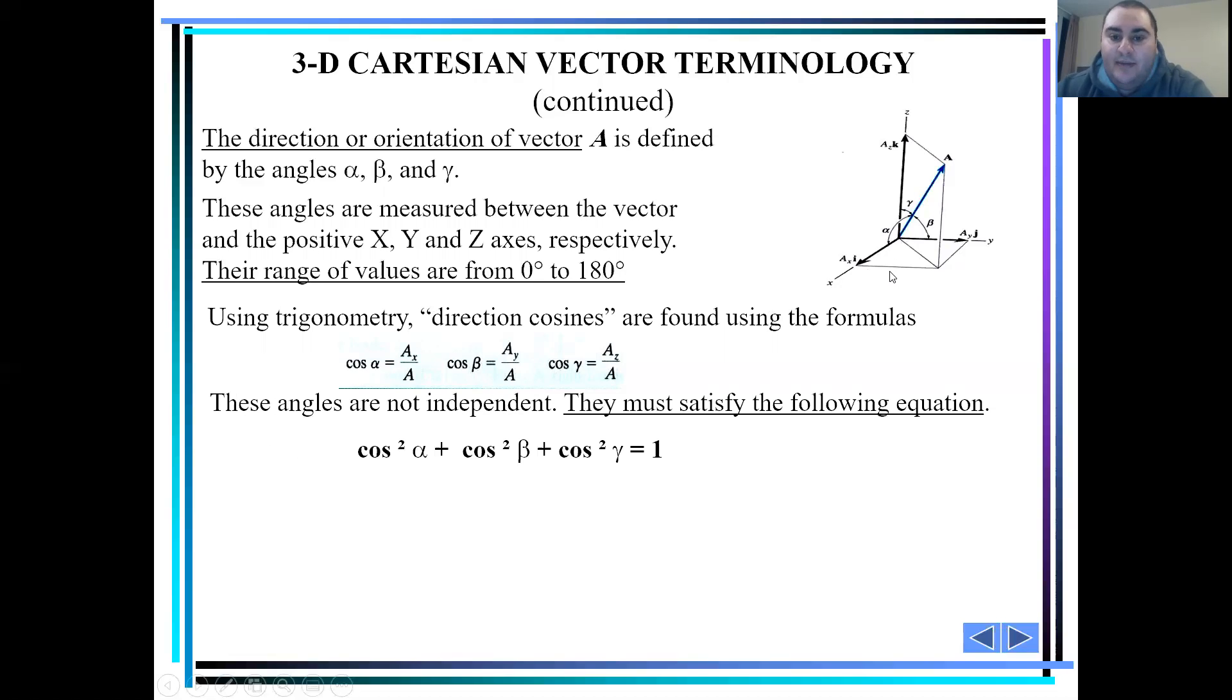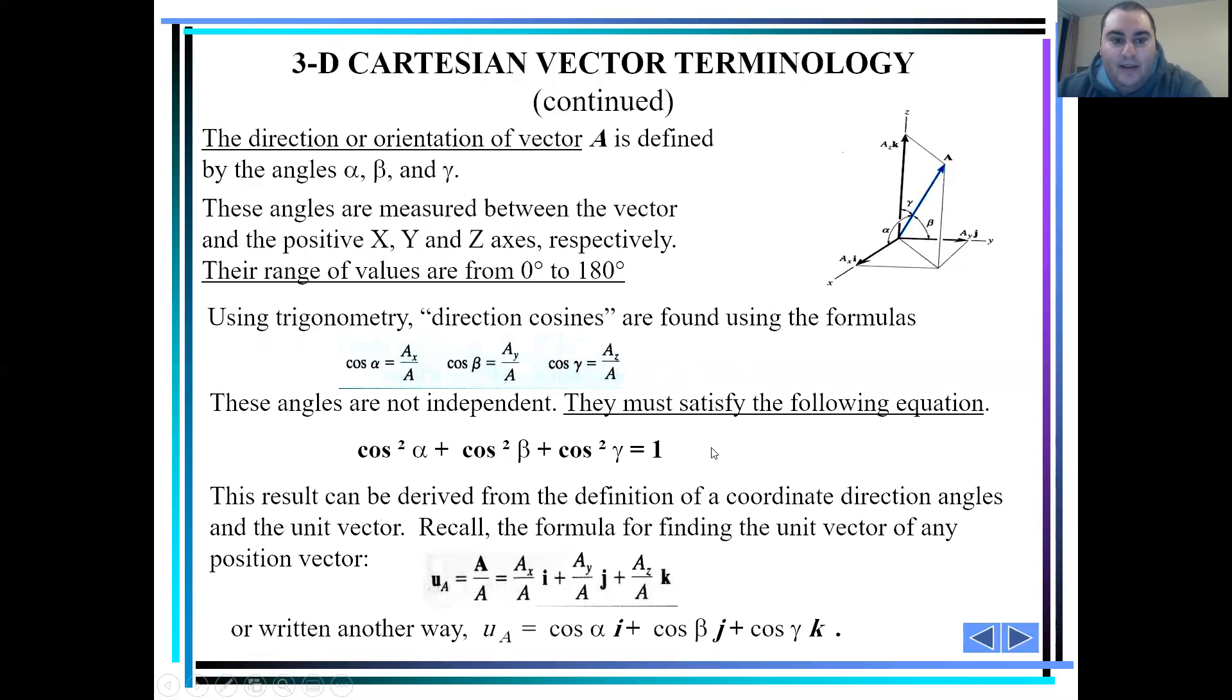Now, these angles are not independent. They must satisfy the following equation: cosine squared alpha plus cosine squared beta plus cosine squared gamma equals 1. And the resultant can be derived from the definition of the coordinate direction angles and the unit vector.